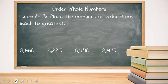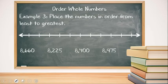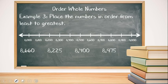In example three, we want to place the numbers in order from least to greatest. Let's consider where our numbers would go on the number line. All of the numbers are in the eight thousands, so we need to look to the hundreds places. Now we want to place our numbers to the number line.